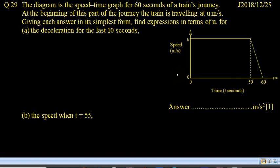Question 25, paper 1, version 2, June 2018. The diagram is the speed-time graph for 60 seconds of a train's journey. At the beginning of this part of the journey, the train is traveling at u meters per second. Giving each answer in simplest form, find expression in terms of u for the deceleration of the last 10 seconds.